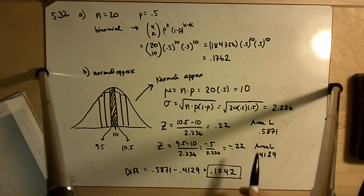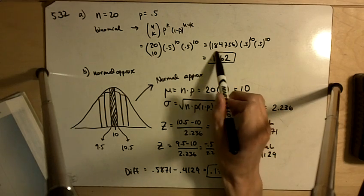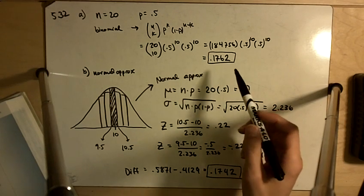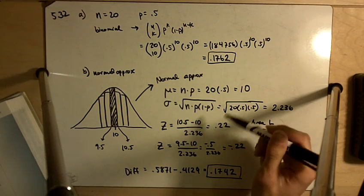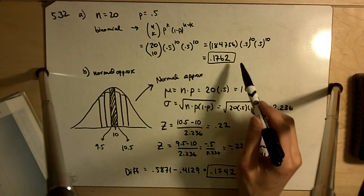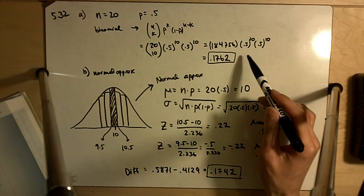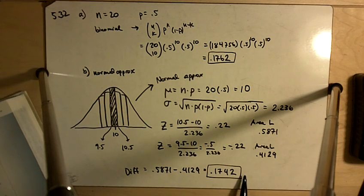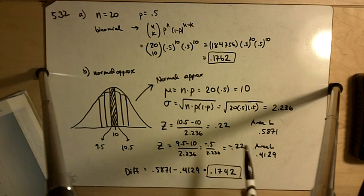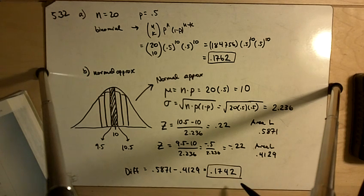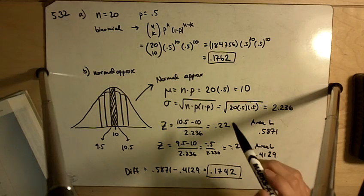This is with the normal approximation, and this is with the binomial distribution. In this case, it was a lot easier to use the binomial distribution, and the normal approximation was more work. This is the exact probability, and this one is pretty close. In this case, it seemed like more work to do the normal approximation, but in other cases, it's a lot easier to do it this way than the binomial.